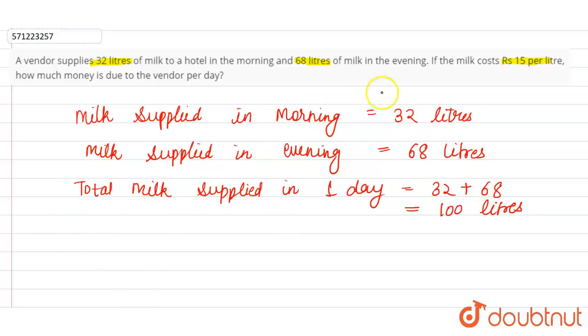Now we have to calculate the cost of the milk. It is given that the milk costs rupees 15 per liter, so cost of one liter of milk is rupees 15.